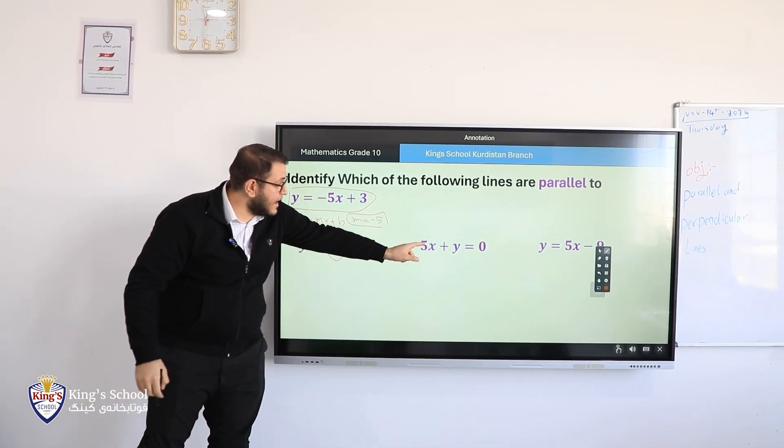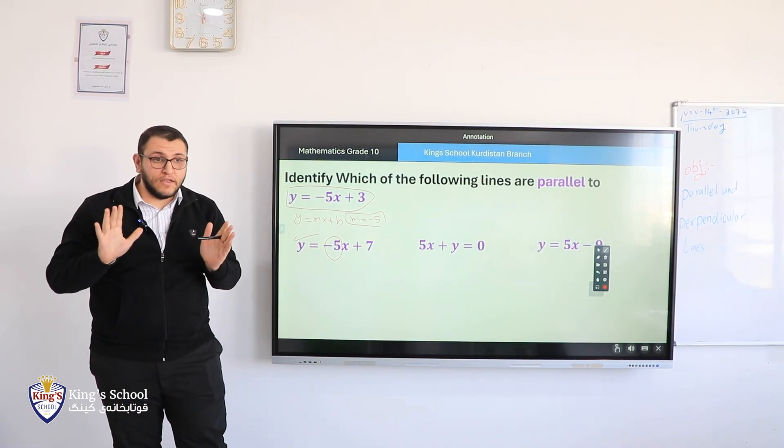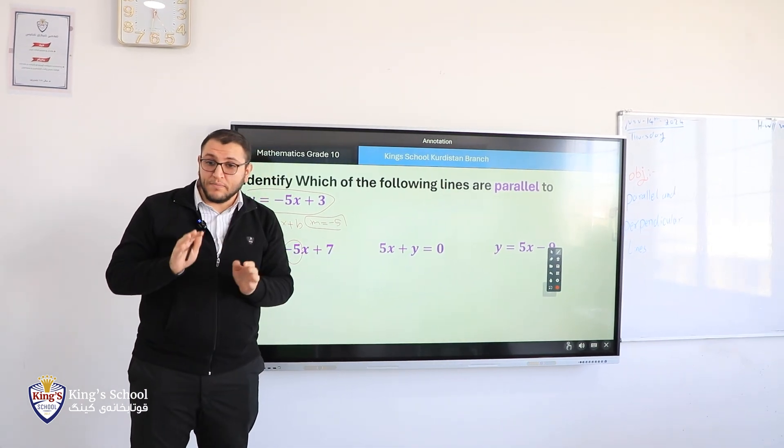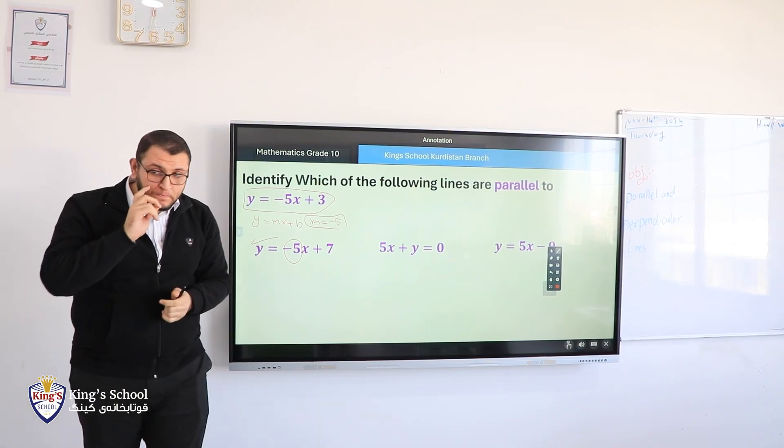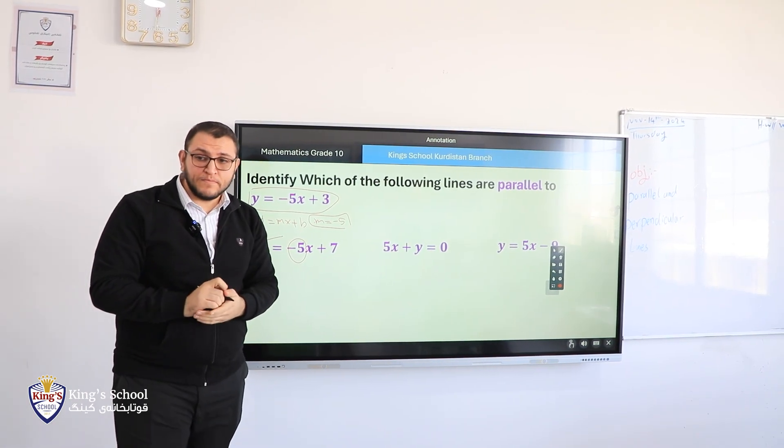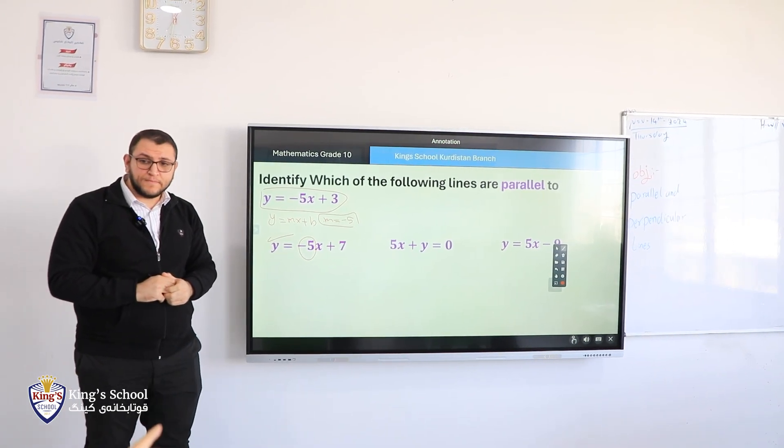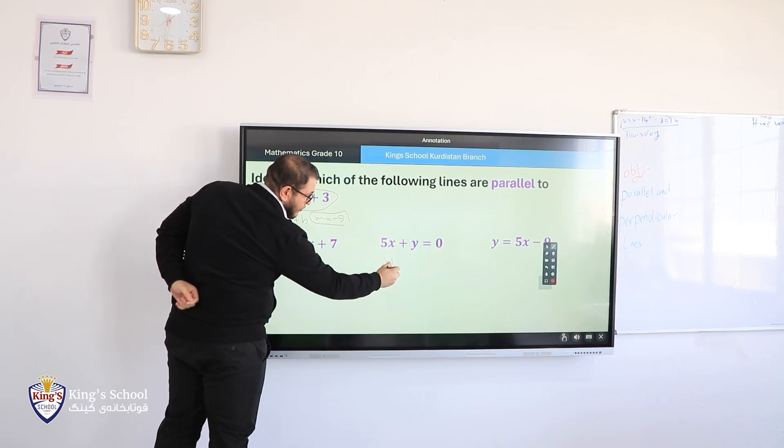Second one. Are this 5x plus y equals 0, this equation, are parallel or not? How we decide? Directly I will say, since the number with x is 5, then not parallel? Or what we should do? Bryan. So since this equation is not as a slope-intercept Y equals MX plus B, so we will take 5 to the other side to make it like the question. So we will say Y equals?